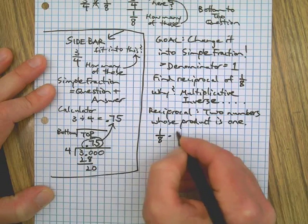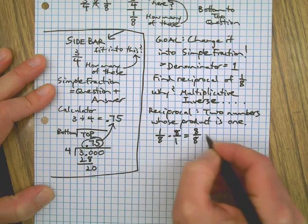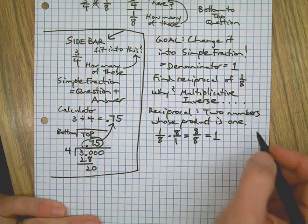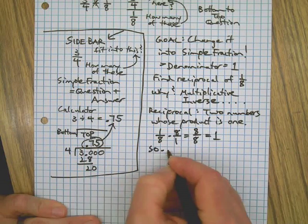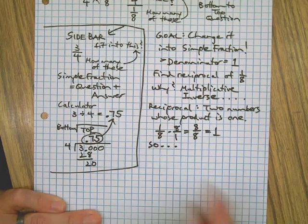A quick and easy way to get a reciprocal or a multiplicative inverse is just to flip the fraction over. So in this case, if we flip it, we get 8 on top of 8, which reduces to 1. How many 8s fit into 8? The answer is 1.